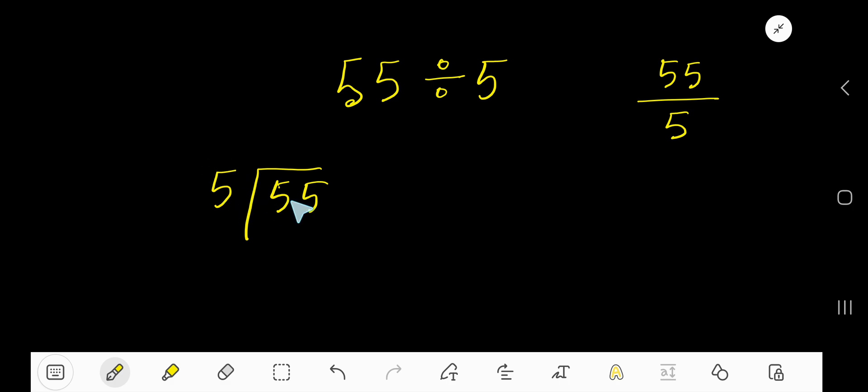5 goes into 5 how many times? Look. This is the multiplication table of 5, and here is the easy way. 5 times 1 is 5. 5 times 2, just add 5 with the previous step, that is 10. 5 times 3, just add 5—15.